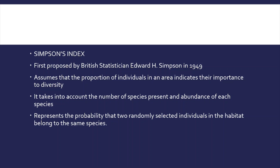Simpson's Index was first proposed by British statistician Edward H. Simpson in 1949. It assumes that the proportion of individuals in an area indicates their importance to diversity. It takes into account the number of species present and the abundance of each species.